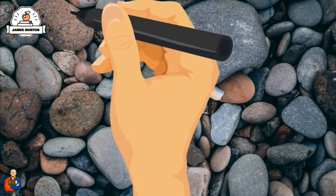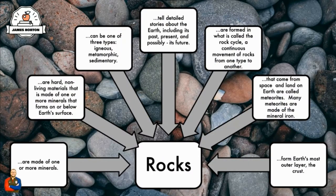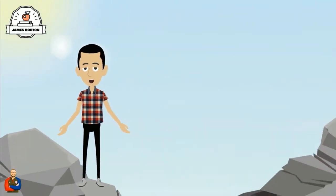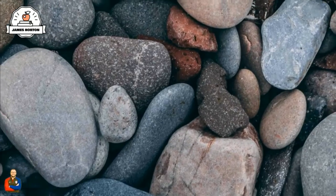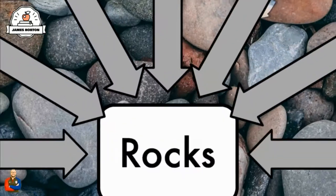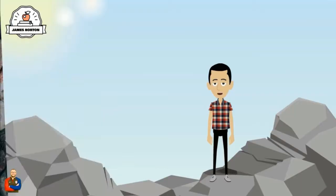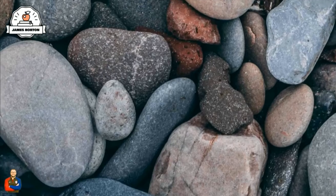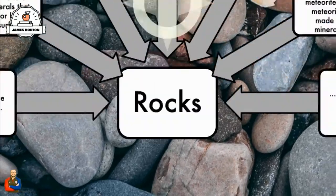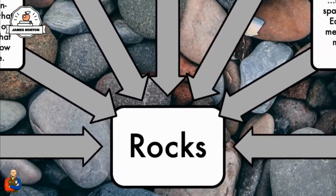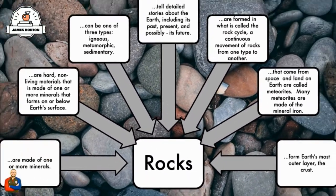Rocks can actually tell detailed stories about the earth, including its past, present, and possibly its future. Rocks are formed in what is called the rock cycle, a continuous movement of rocks from one type to another. Rocks that come from space and land on earth are called meteorites. Many meteorites are made of the mineral iron.